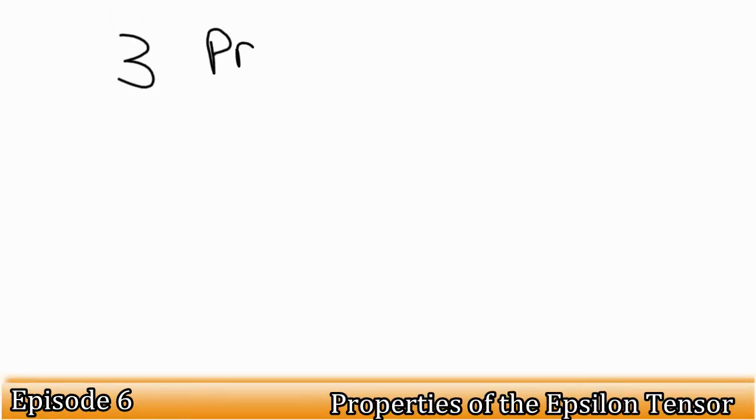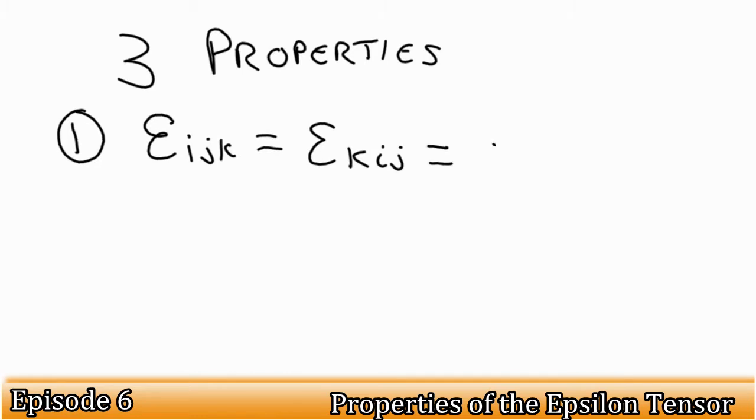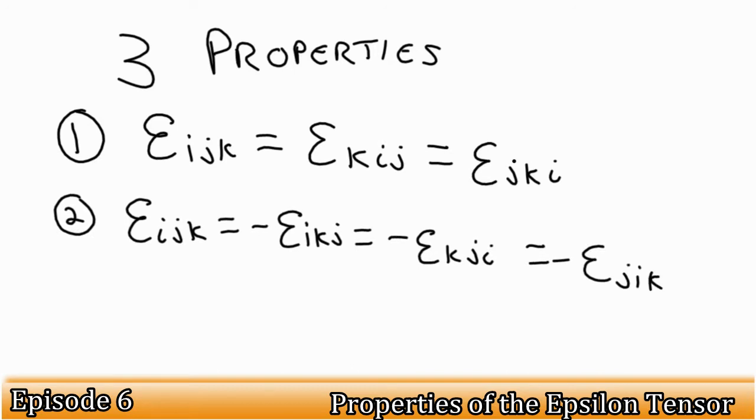Let's now go deeper into the properties of the alternating tensor. Like in the last video, take a few moments to think about why these properties hold. We'll discuss them further afterwards. The first property is epsilon i, j, k is equal to epsilon k, i, j, which is equal to epsilon j, k, i. The second property is epsilon i, j, k is equal to negative epsilon i, k, j, which is equal to negative epsilon j, i, k. The third property is epsilon i, i, j is equal to epsilon i, j, i, which is equal to epsilon j, i, i, which is equal to zero.